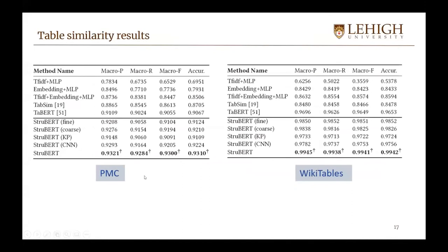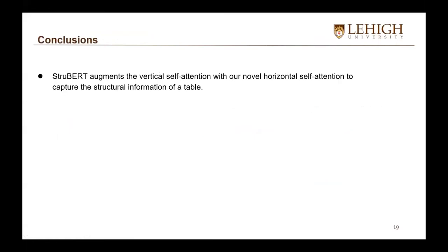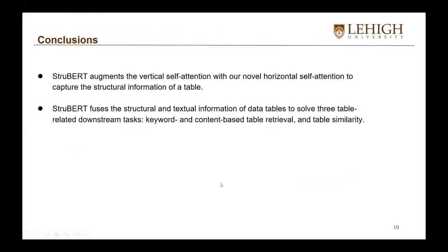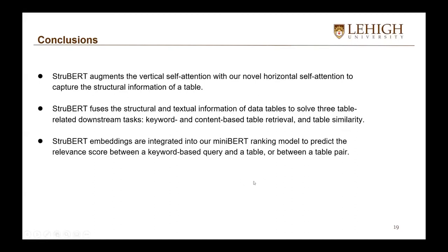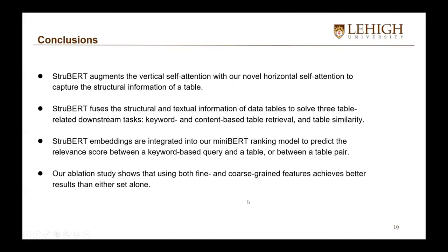For table similarity results, we report on two datasets — PMC and WikiTables — using micro precision, recall, F1 score, and accuracy. Our full model Strubert outperforms all baselines and system variations. To conclude, Strubert augments vertical self-attention with our novel horizontal self-attention to capture the structural information of tables. Strubert fuses structural and textual information to solve three table-related downstream tasks: keyword-based table retrieval, content-based table retrieval, and table similarity. Our ablation study shows that using both fine and coarse-grained features achieves better results than either set alone.